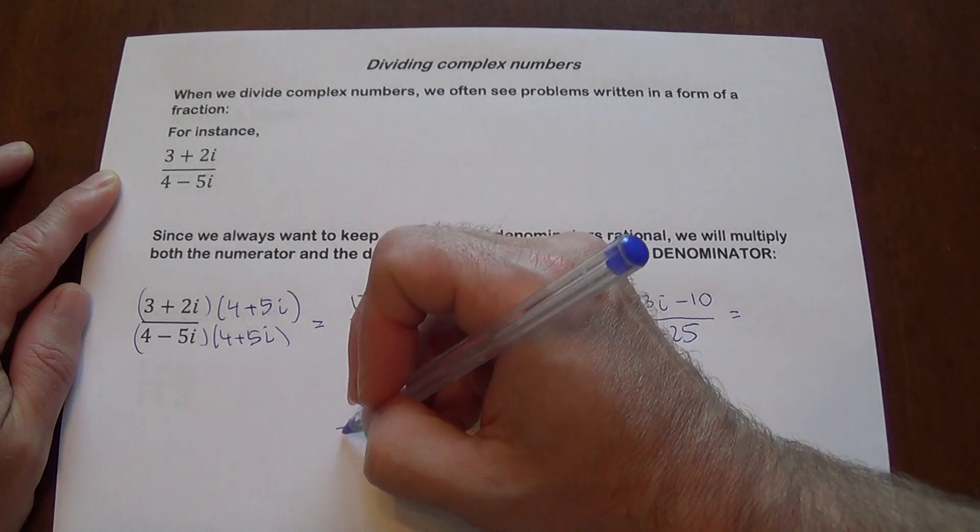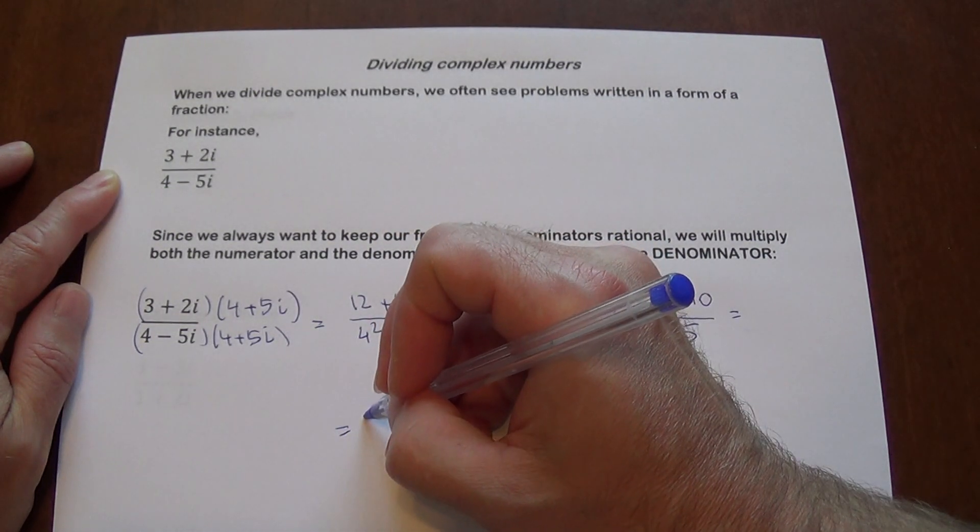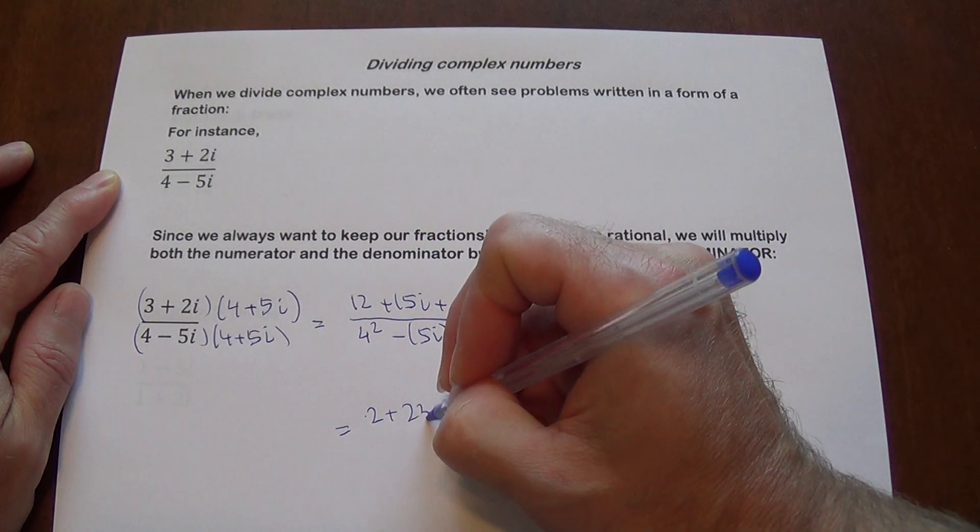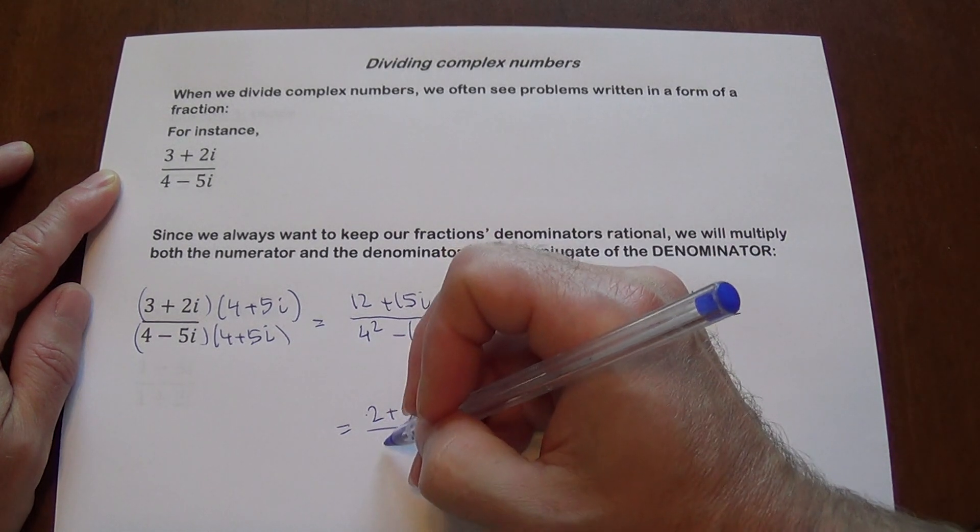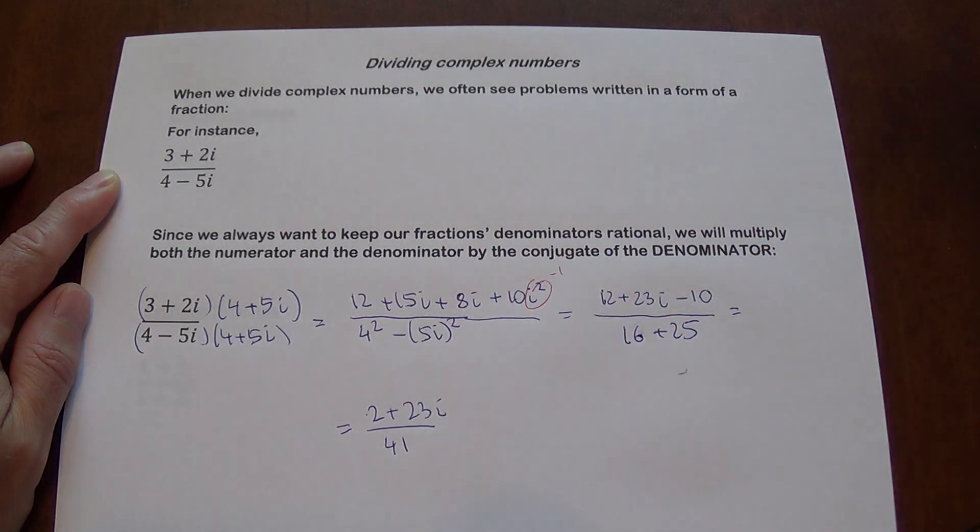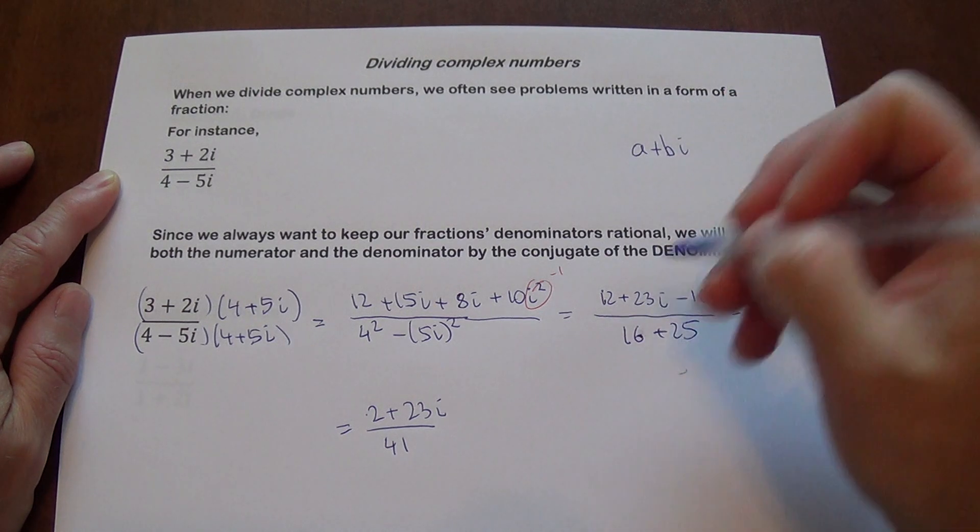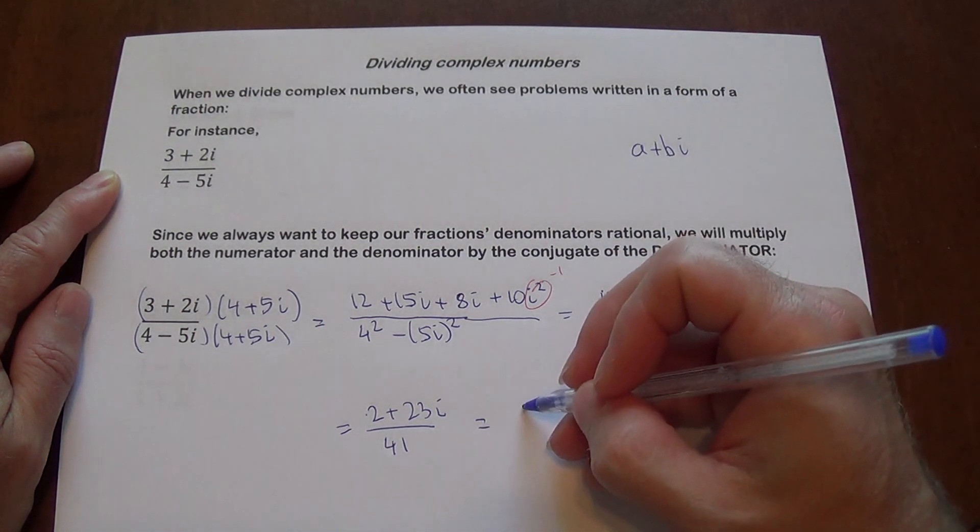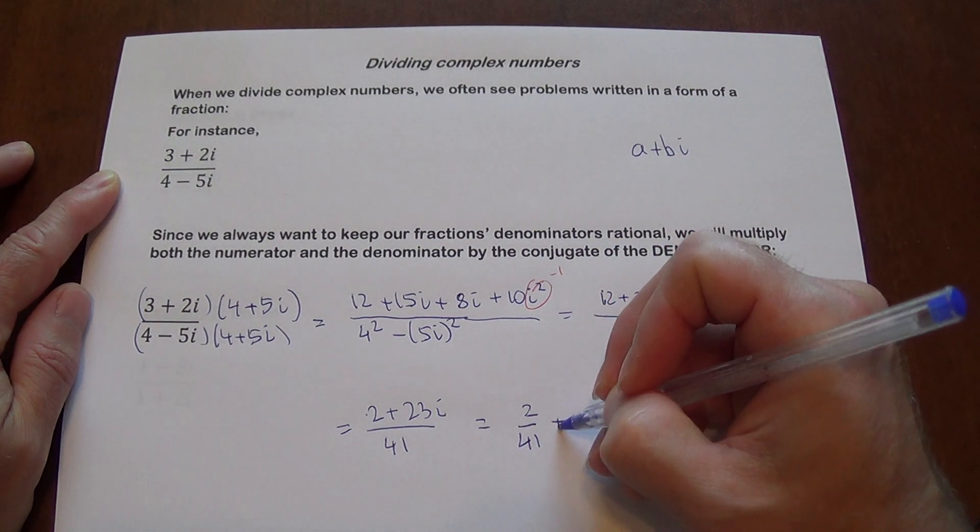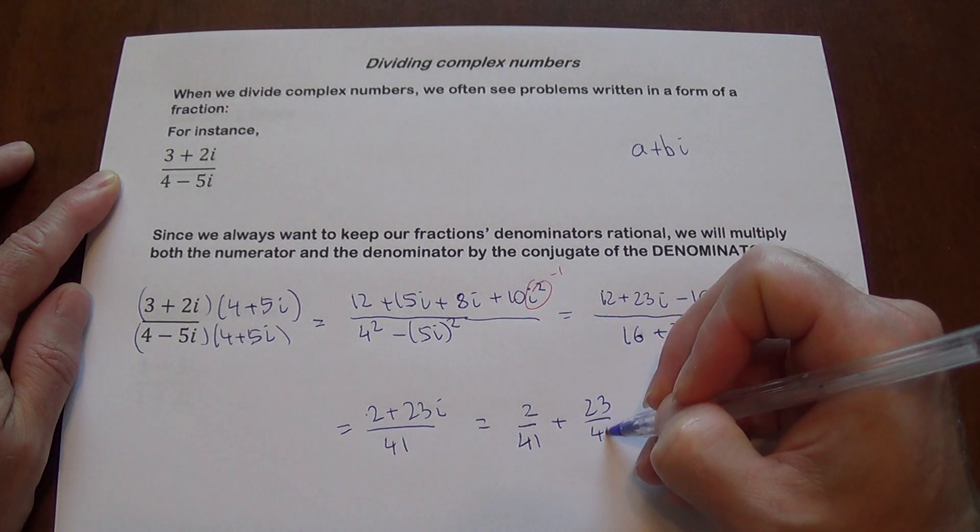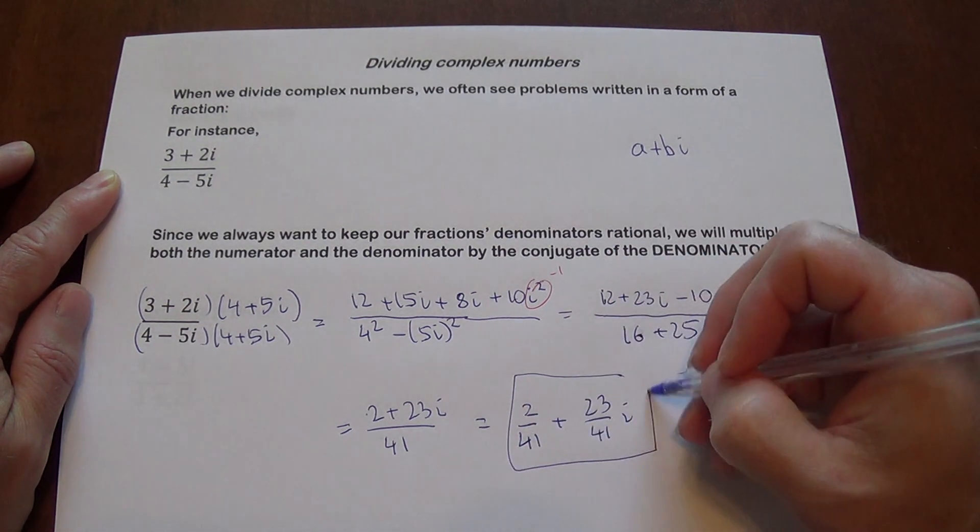So this is 12 plus 23i minus 10, which is going to give us 2 plus 23i divided by 41. Now we do need to put it in standard form, and the standard form of a complex number is this. So basically just split it. So it's 2 over 41 plus 23 over 41i, and this is the answer.